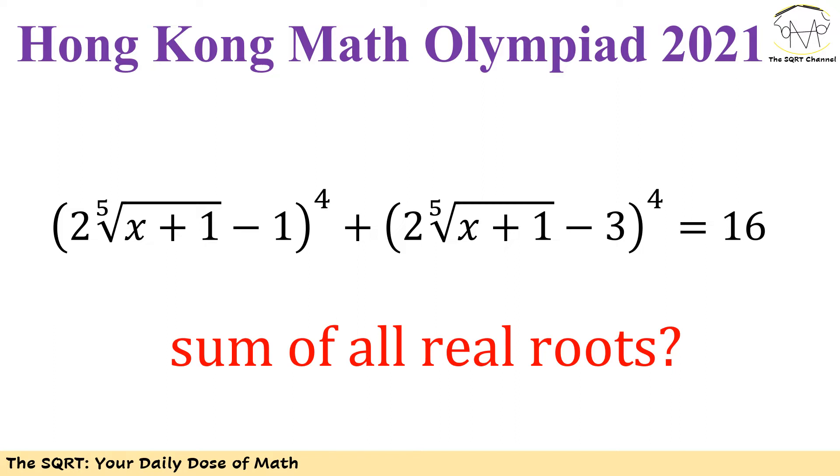The equation itself includes two terms. I have power of four of two times the fifth root of x plus 1 minus 1, as you are seeing here. The second term is going to be similar to the first term, but instead of negative 1 I have negative 3.